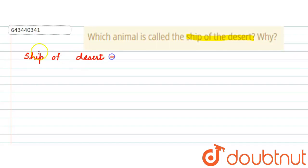Let's start with the solution for this question. Camels are the animal which are known as ship of the desert. Now if we talk about the reason why they are called ship of the desert, there are several reasons.